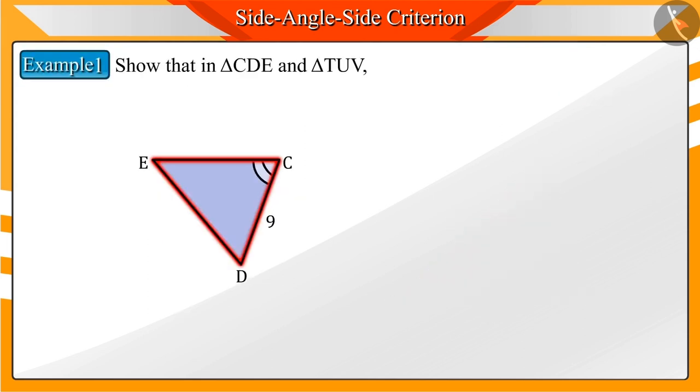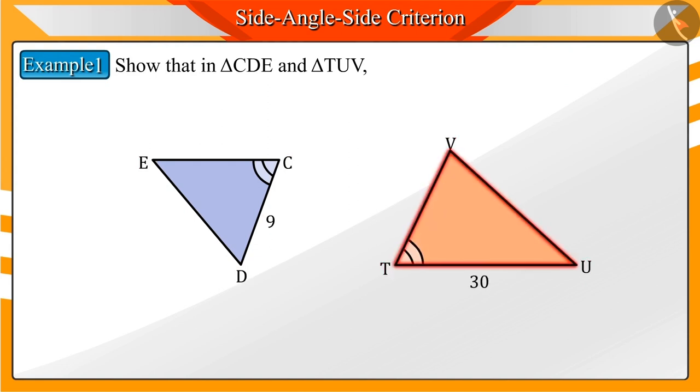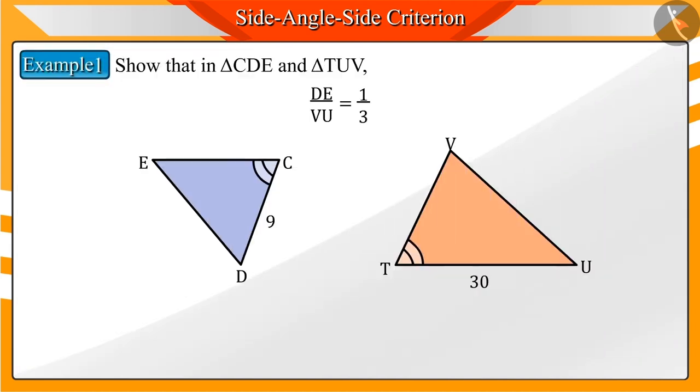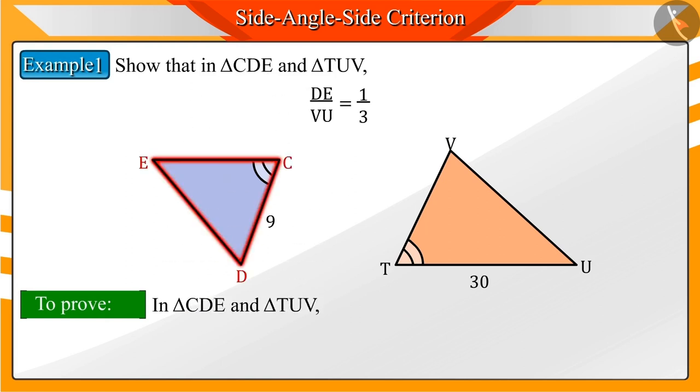Show that in triangles CDE and TUV, the proportion of sides DE and VU is 1 by 3. Pause the video to solve the question and match your answer. We need to prove in the given triangles CDE and TUV that the ratio of DE and VU is 1 by 3.